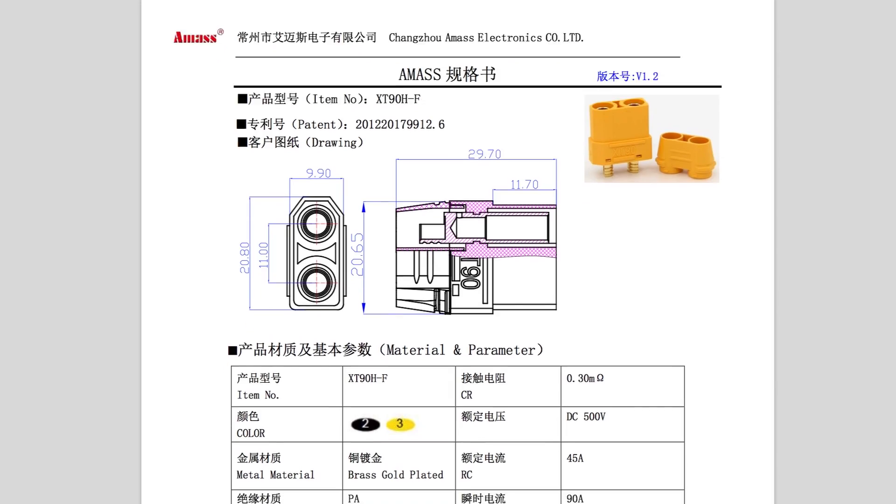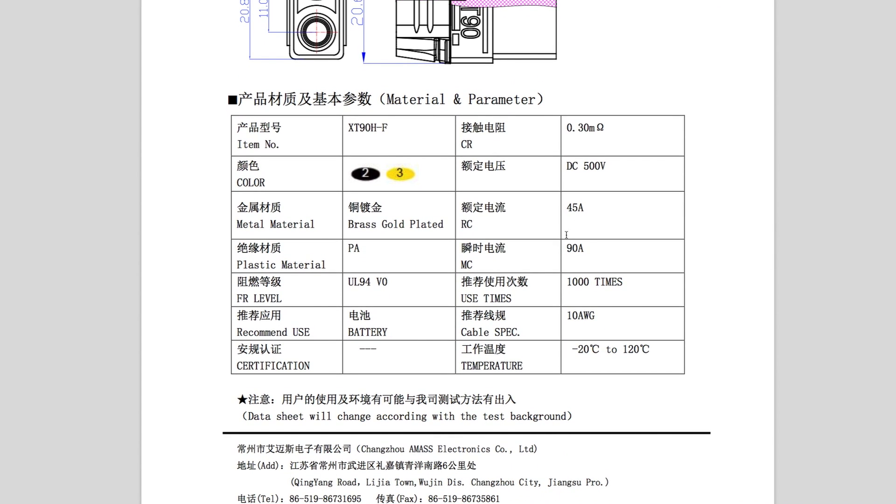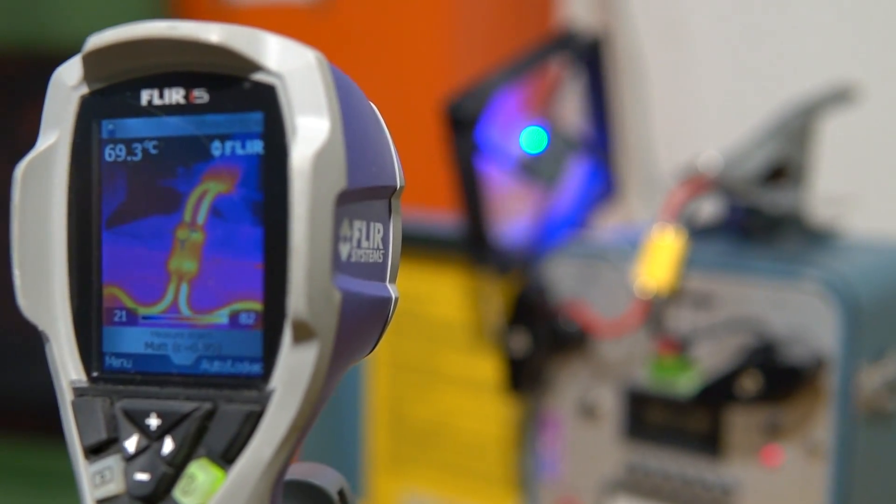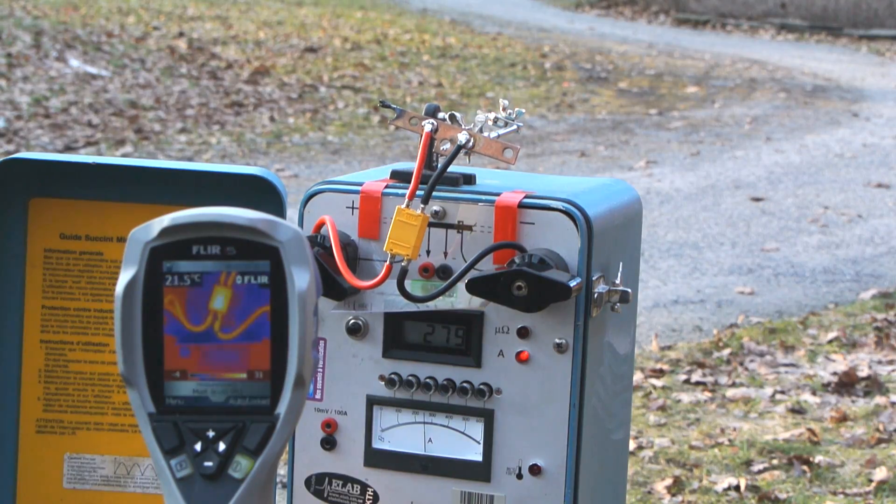Officially, the XT90 is rated for a mere 90 amperes, and we can confirm that at that current, the connector will stabilize around a chill 70 degrees celsius. But let's be honest, even my electric toothbrush will draw a little more than that on a warm day.